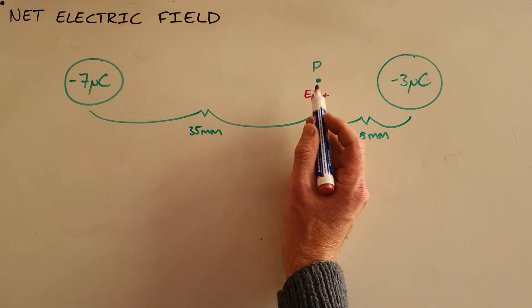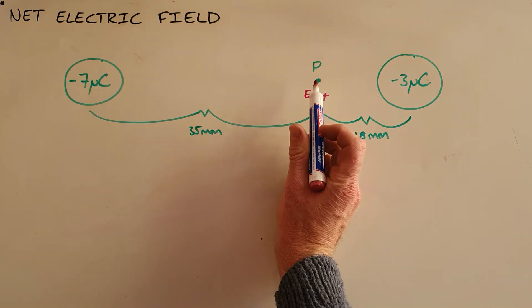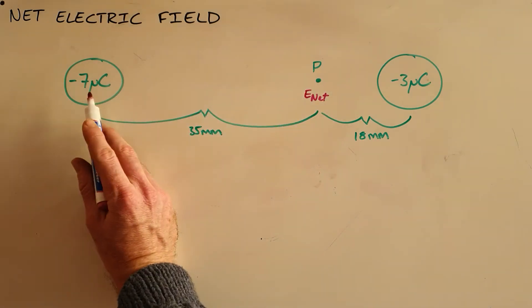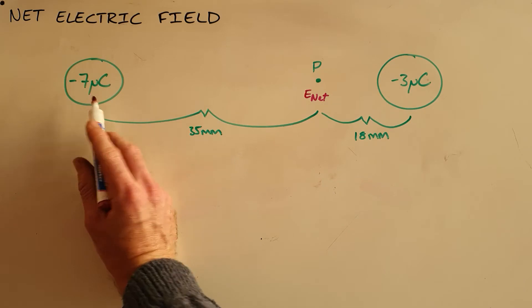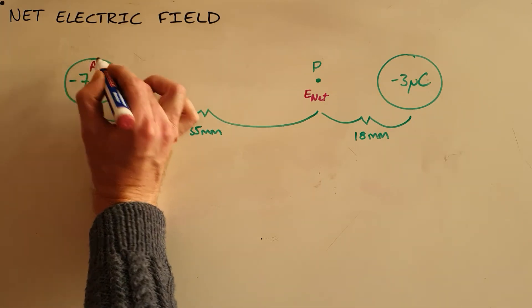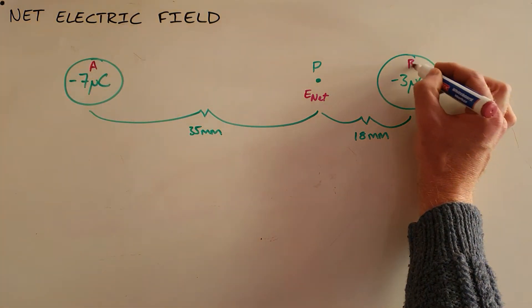So what we can see here is there are two electric fields that are experienced at this point. The first being the electric field as a result of this first charge. Let's call it charge A and this charge B.